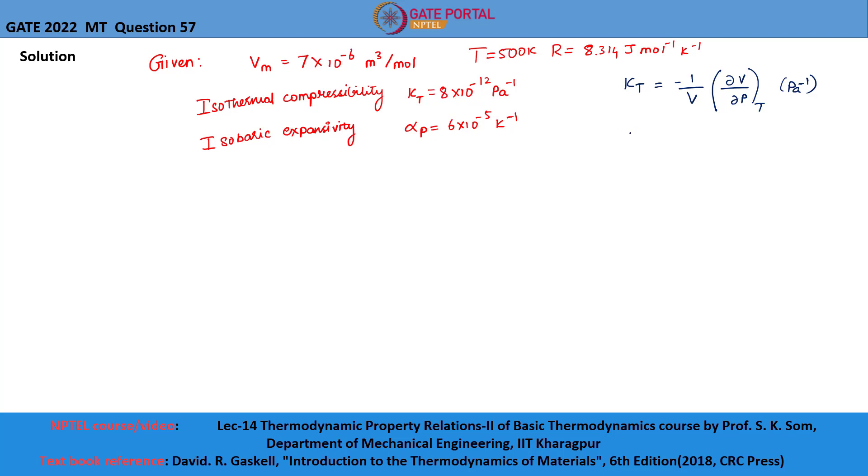Whereas, isobaric expansivity alpha P is equal to 1 by V dV by dT at constant P, which is the fractional change in volume of a substance with respect to temperature at constant pressure.